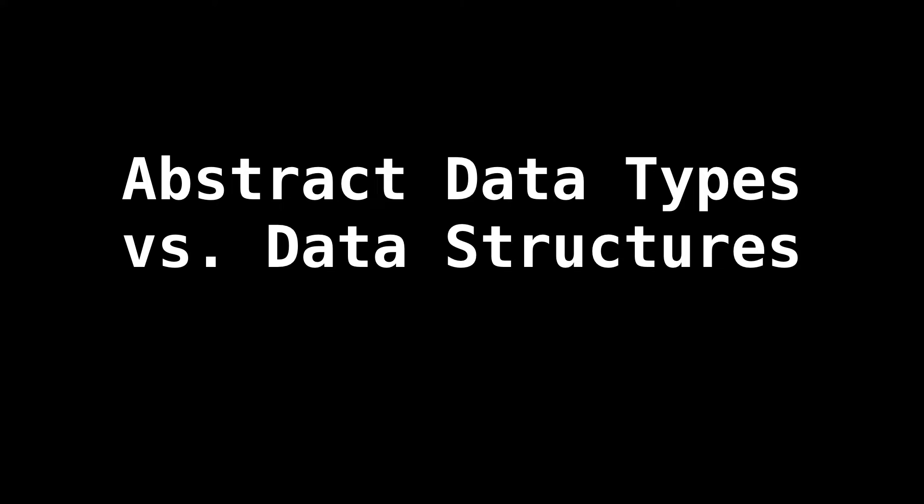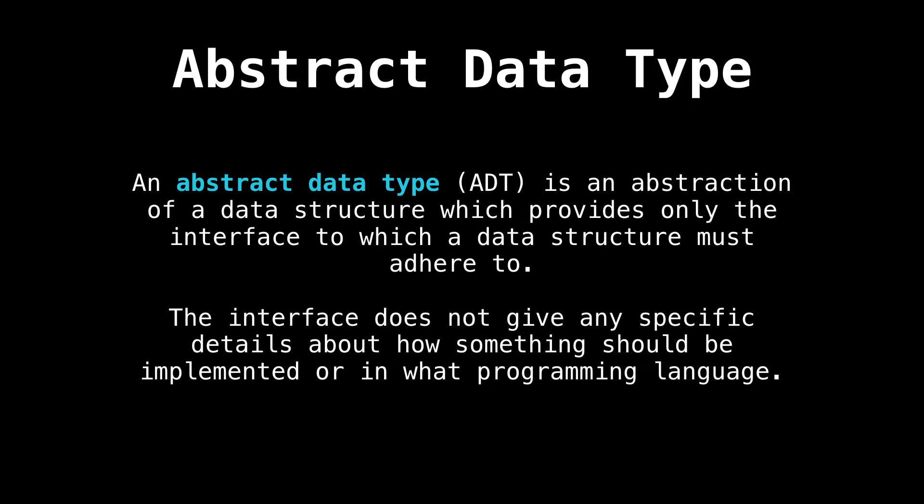It is strange that before we even begin talking about data structures that we need to talk about the abstraction of data structures. What I'm talking about is the concept of an abstract data type. What is an abstract data type? And how does it differ from a data structure?